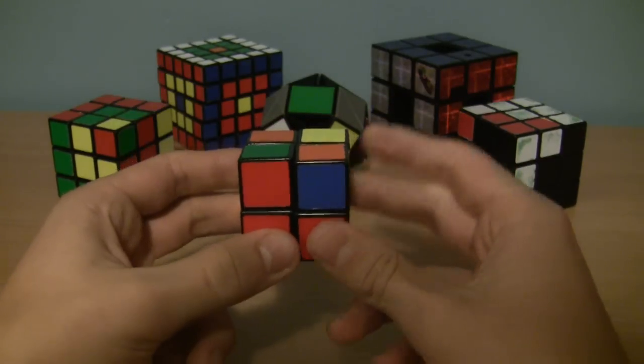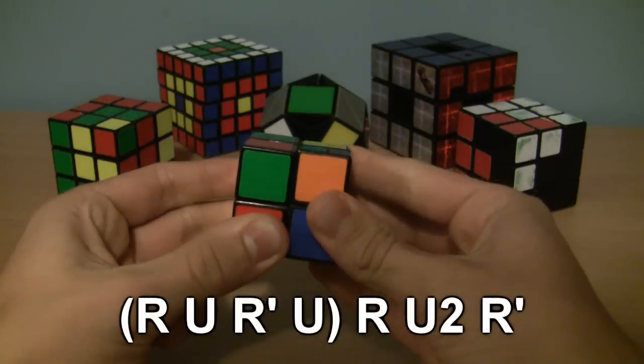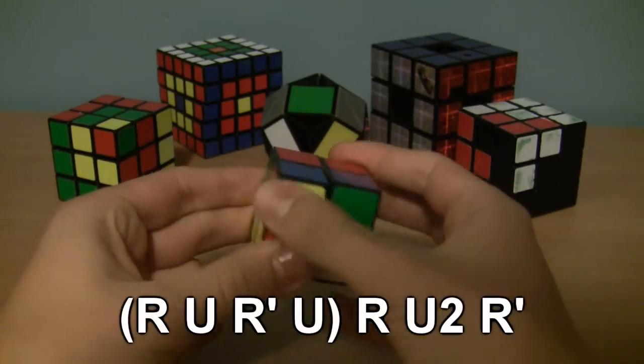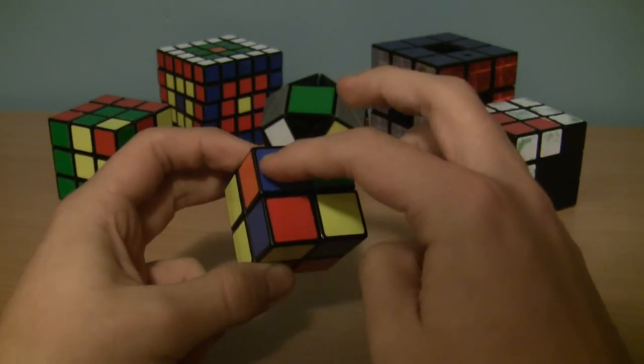However, if you don't know the algorithm, it is r, u, r', u, r, u2, r'. So we did that, and now you can see we have one piece oriented.